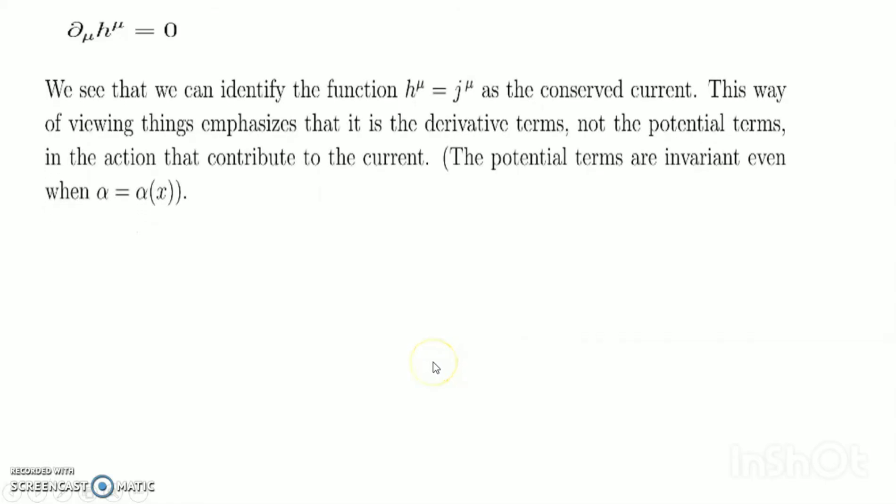We see that we can identify the function h^mu as the conserved current j^mu. This way of viewing things emphasizes that it is the derivative terms, not the potential terms in the action, that contribute to the current.